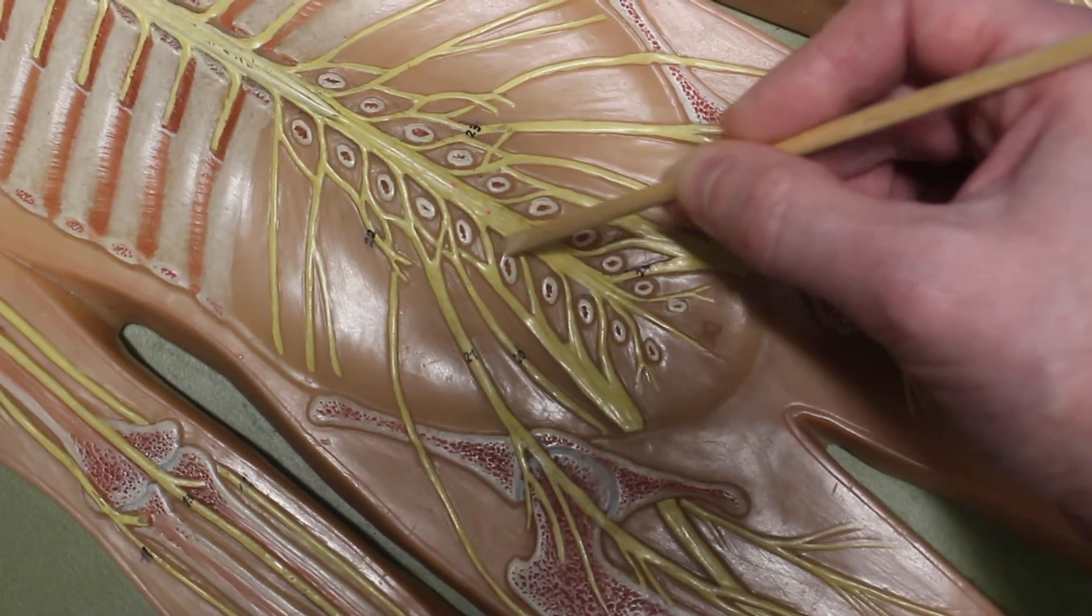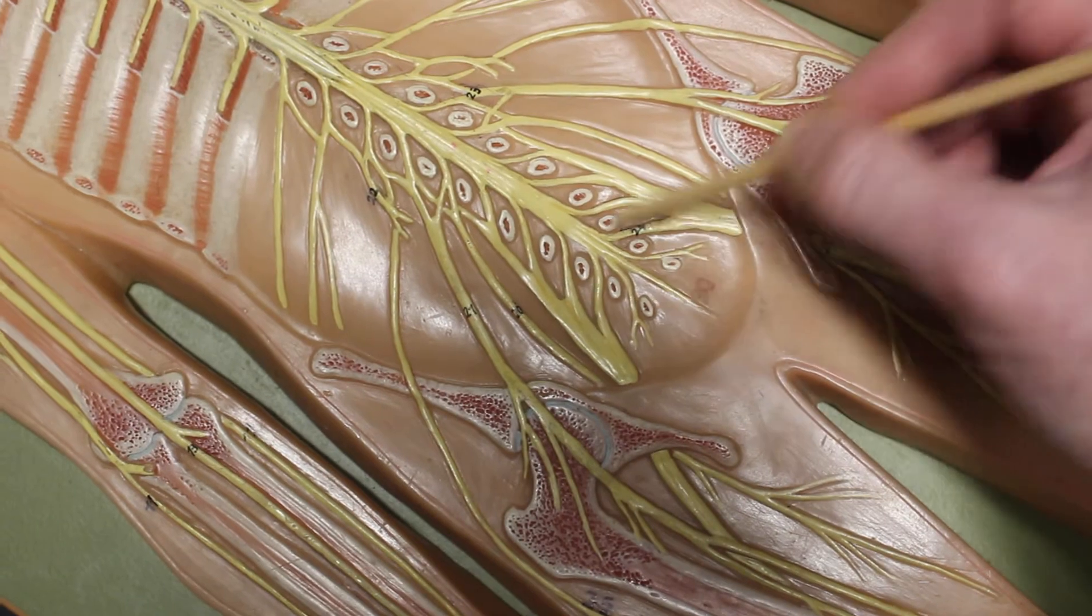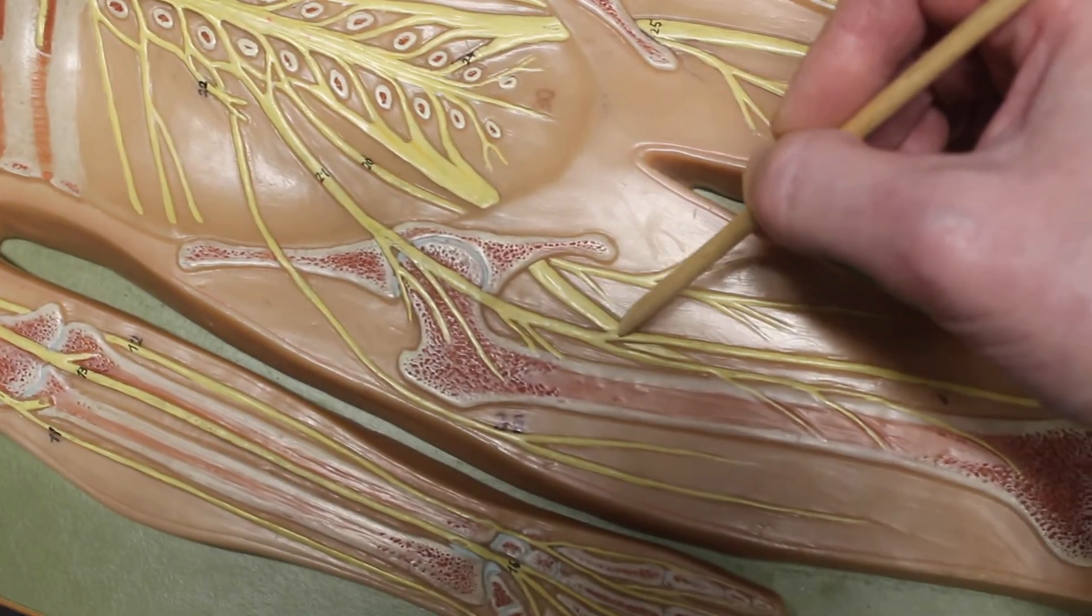Below that, we have the sacral nerves. These are each a sacral nerve. They lead to a sacral plexus on either side, a sacral plexus, which becomes the sciatic nerve. So this is the sciatic nerve.